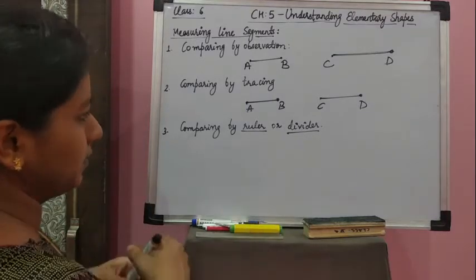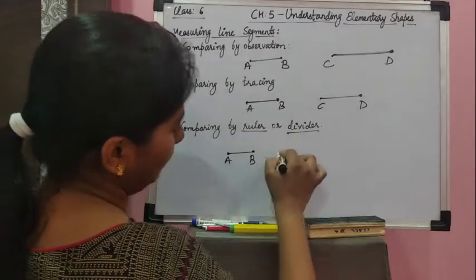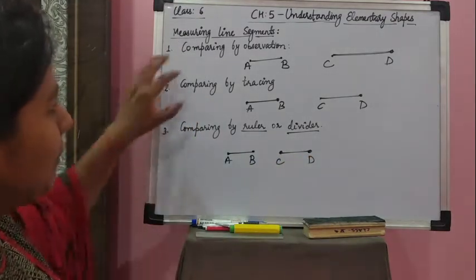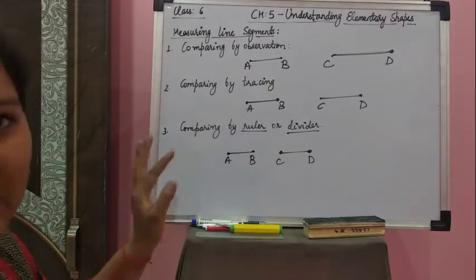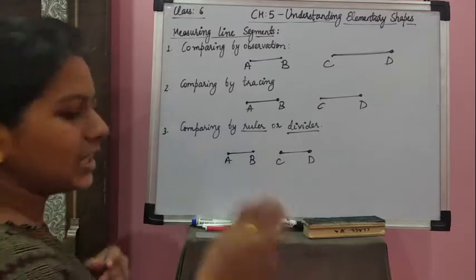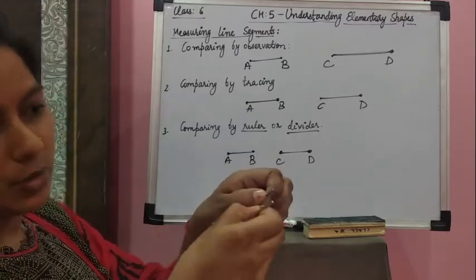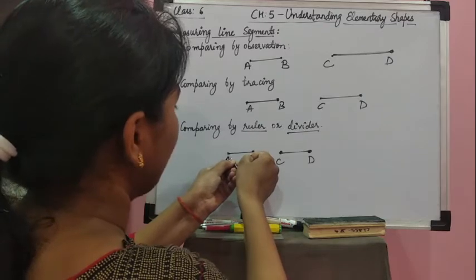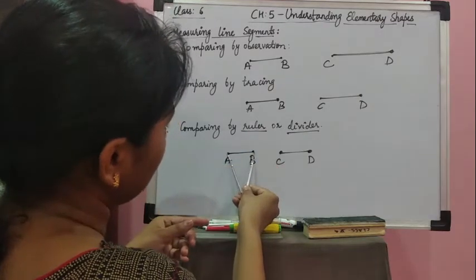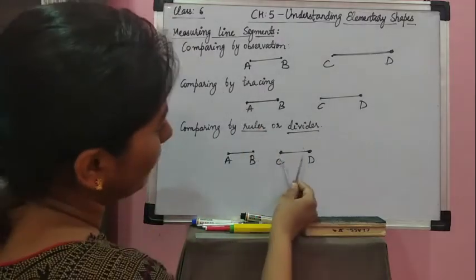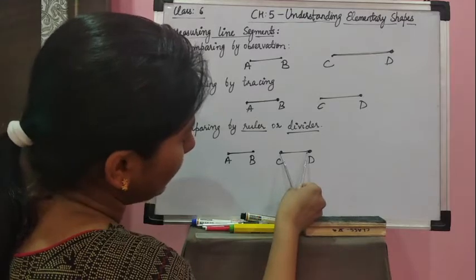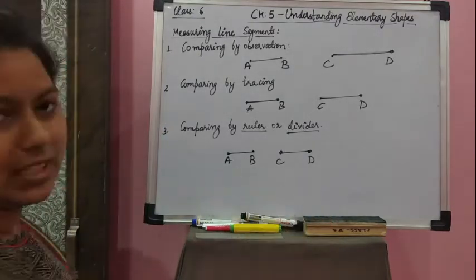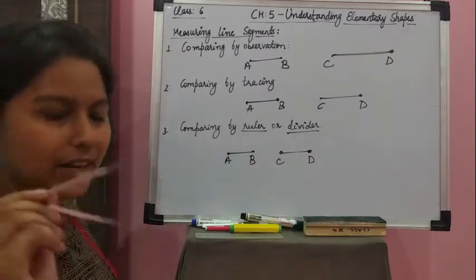Now how can I compare by divider? Let's say I am making two approximately equal line segments. If you compare only by observation you will say both line segments look the same. But when I compare by divider — I open the divider and put it on this line segment, so that line segment is measured. Now if I put the same divider on CD, you can see that CD goes beyond the divider. That means CD is quite bigger than line segment AB. So in this way, by divider also we can compare.